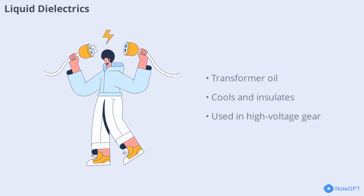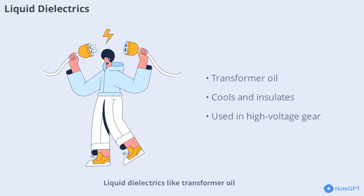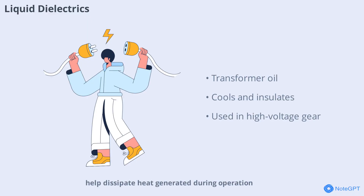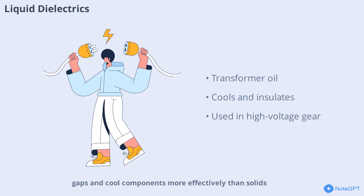Liquid dielectrics like transformer oil are used in high-voltage transformers and circuit breakers. These liquids provide insulation and help dissipate heat generated during operation. Their fluid nature allows them to fill gaps and cool components more effectively than solids, making them essential in large-scale electrical equipment.